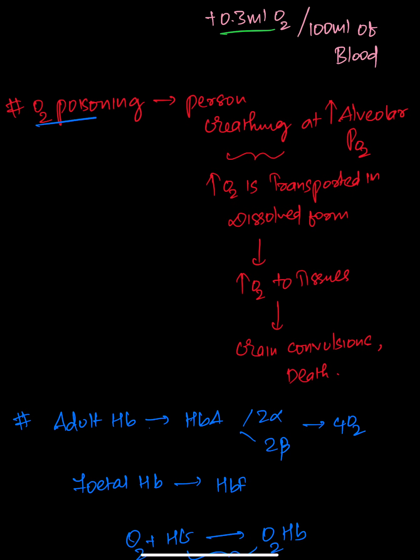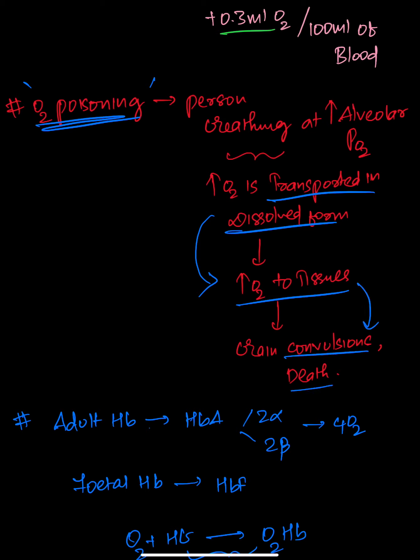Now about oxygen poisoning: when a person breathes at high alveolar partial pressure of oxygen, more oxygen is transported in the dissolved form. This increased dissolved oxygen at the tissues causes brain convulsions and can ultimately lead to death. This is what is meant by oxygen poisoning.